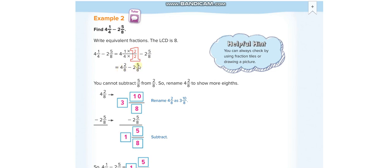Now the same problem: 4 and 2/8 minus 2 whole 5/8. The problem is we cannot minus 5 from 2, so we have to rename the first fraction here. Rename it into 3 whole 10/8. How did they do it? I will show you here on the side. It was 4 whole 2/8.